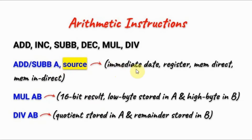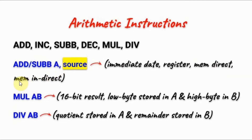The source can either be an immediate data, meaning we have an 8-bit number that we want to add or subtract with the contents of the accumulator, and the result will always go to the accumulator. Or the source could be another register, such as register B or one of the R registers. Or it could be memory direct, meaning we have a byte at a memory location which we can directly add or subtract with the contents of A. Or it could be memory indirect, meaning a byte located at a memory location is indirectly accessed through another register and is added or subtracted with the accumulator.